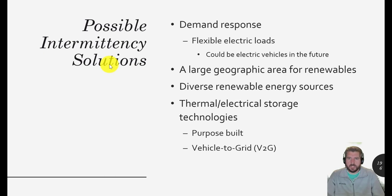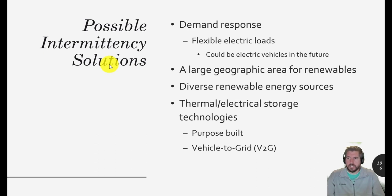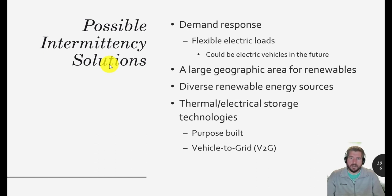So let's think about some other possible solutions. Demand response just means that when we really need to conserve electricity — maybe the sun's not shining and the wind's not blowing — we use less somehow. Maybe it's automatic: thermostats in summer turn up a few degrees so air conditioning runs less, lights automatically dim, or there are programs where a device in your outlet changes color when electricity is more expensive, so you know not to run your washing machine or dryer at that time.